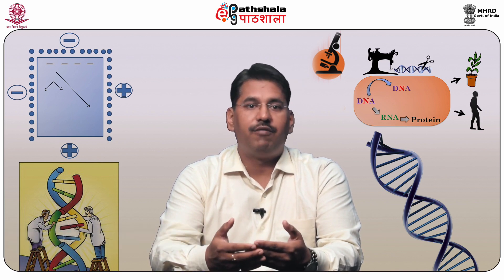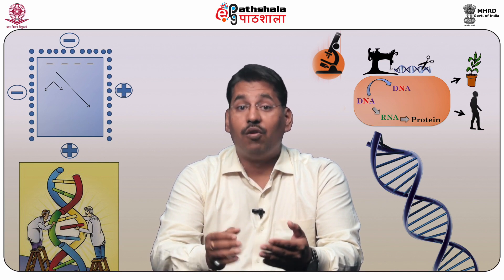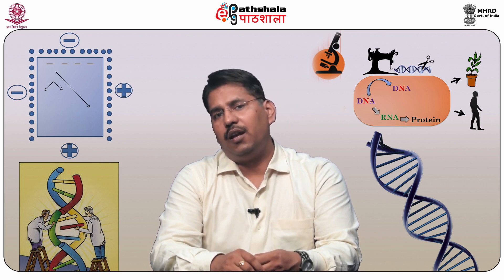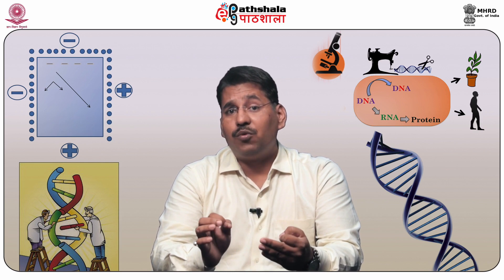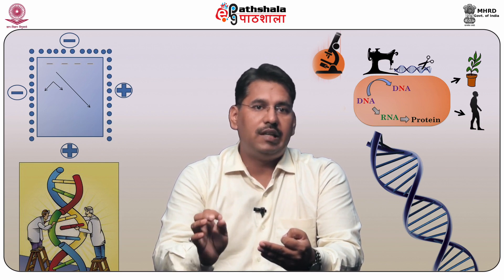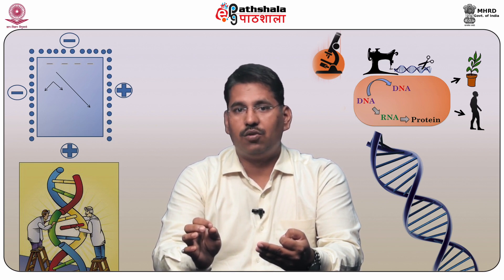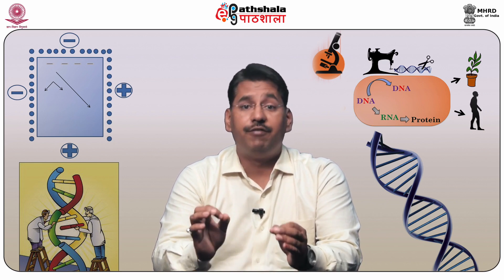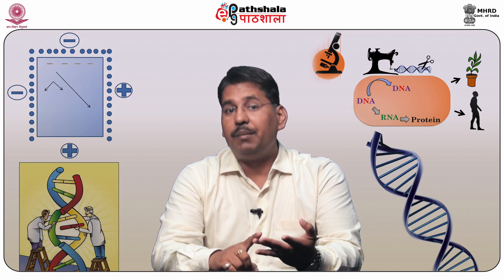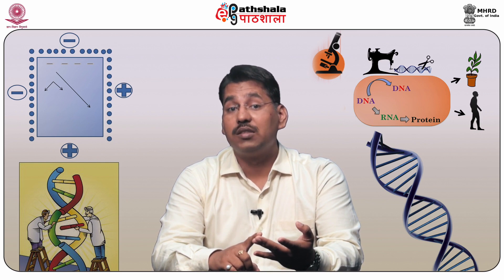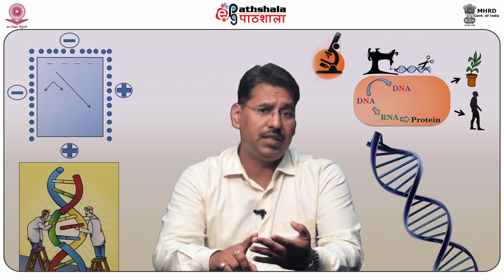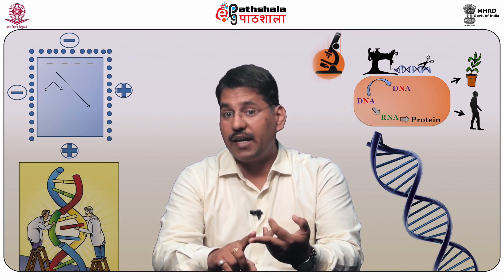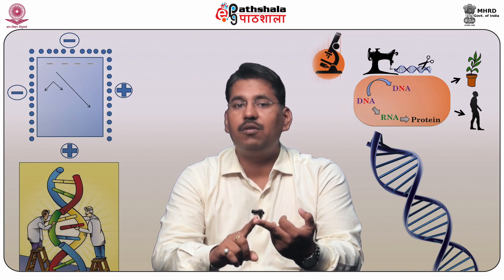Bacteriophage lambda is a temperate bacteriophage of family Styloviridae; its host is E. coli K12 strains. It is the most studied bacteriophage, with a fully sequenced linear double-stranded DNA genome of approximately 49 kb. Bacteriophage lambda has 50 genes and 12 base pair complementary overhangs at both ends, known as cos sites. Only half the number of genes are essential for it to infect, replicate, and package its DNA into the viral capsid.